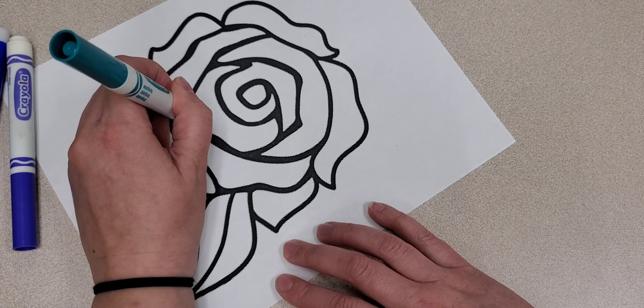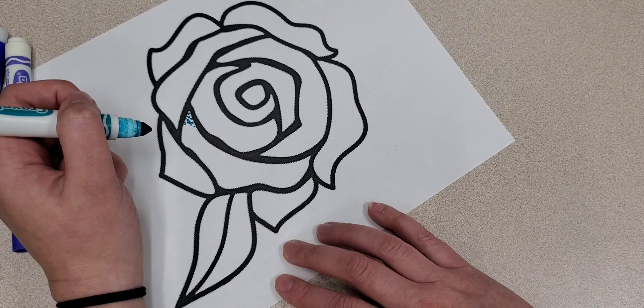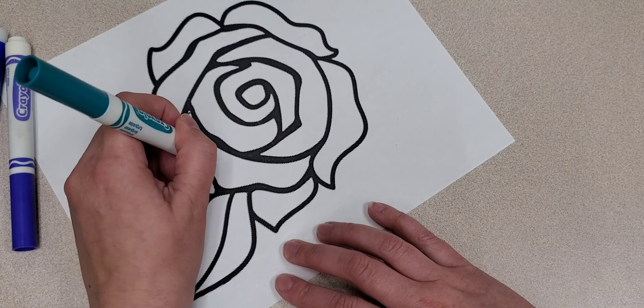So what I'll do is I'll put a whole bunch of dots super close together. This gives the illusion of a shade. As I'm going away from that dark spot, I'm going to start spacing out my dots a little bit more.